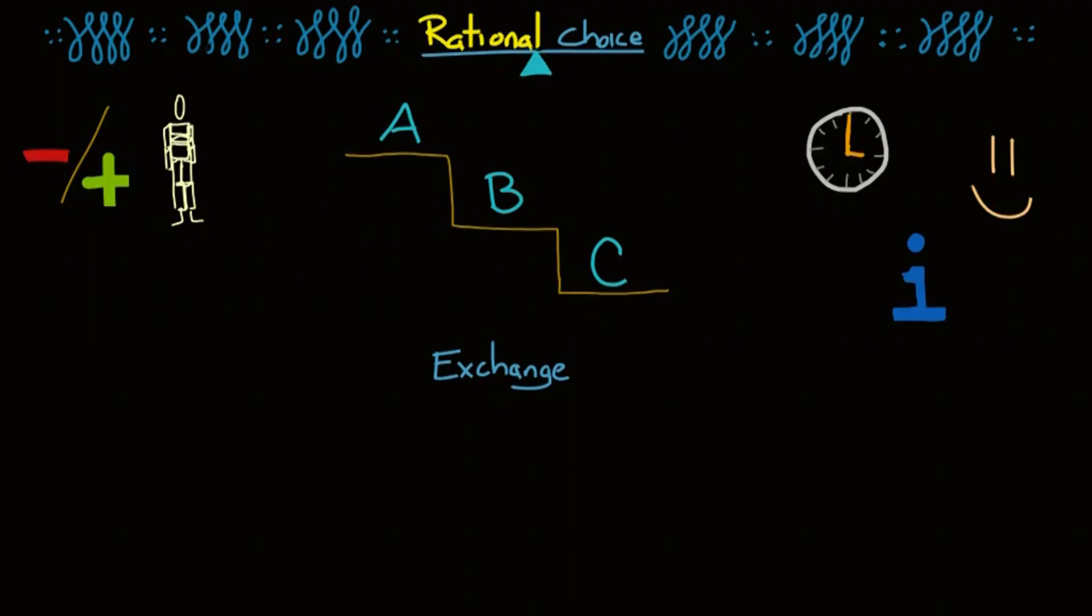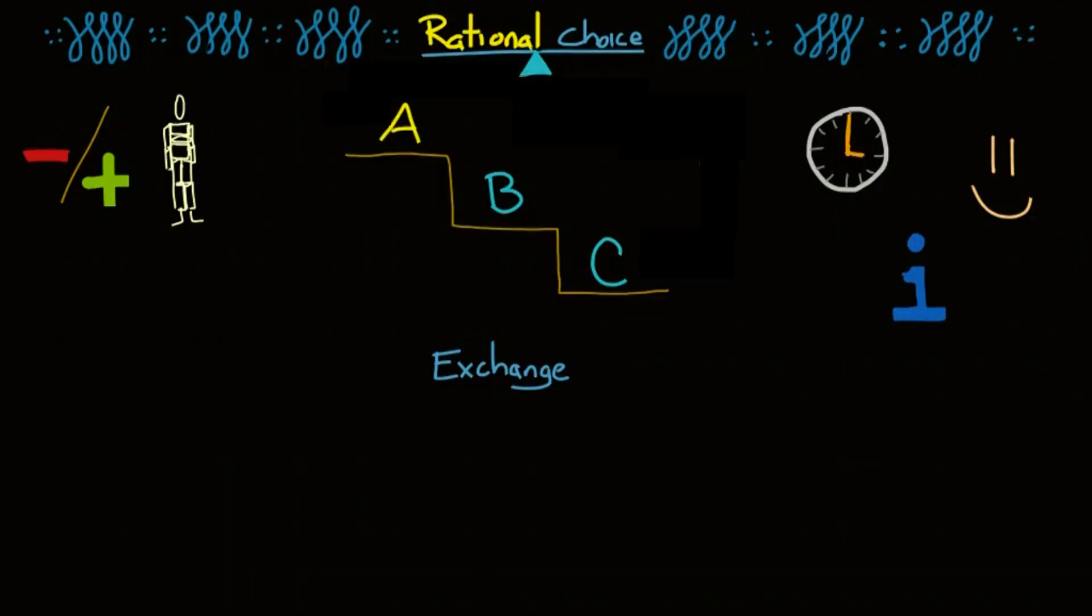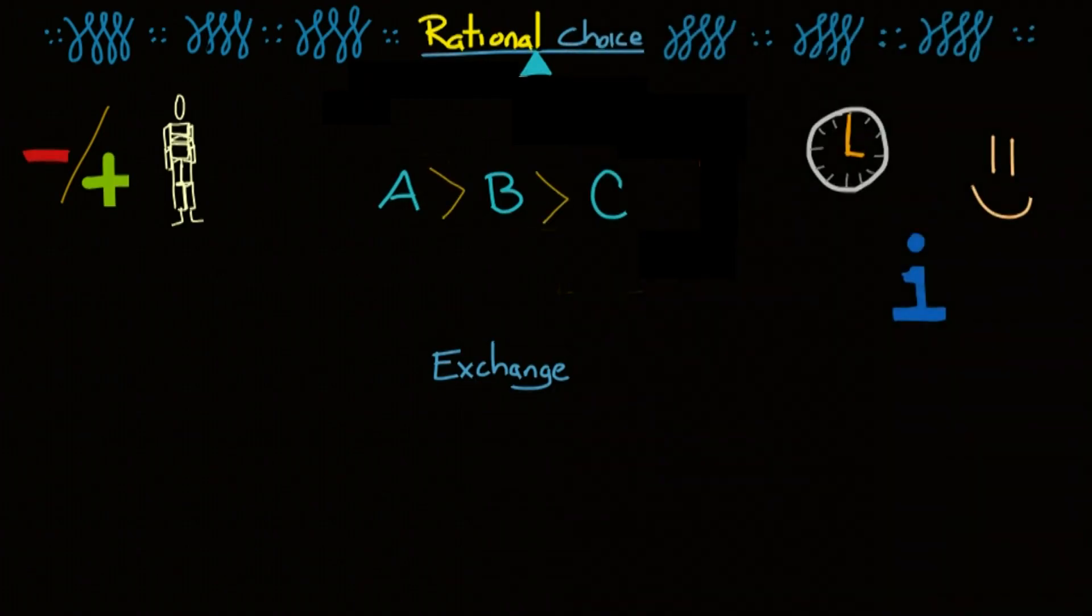This leads to the second assumption, transitivity. This means that if we take a look at those three options I have, since A is preferable to B is preferable to C, then A is also preferable to C. It's like in math, A is greater than B is greater than C, therefore A is greater than C.